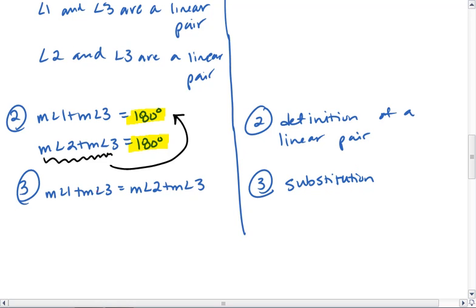Now we can cancel out our measures of angle 3, leaving us with measure of angle 1 equals the measure of angle 2. We did that through subtraction.